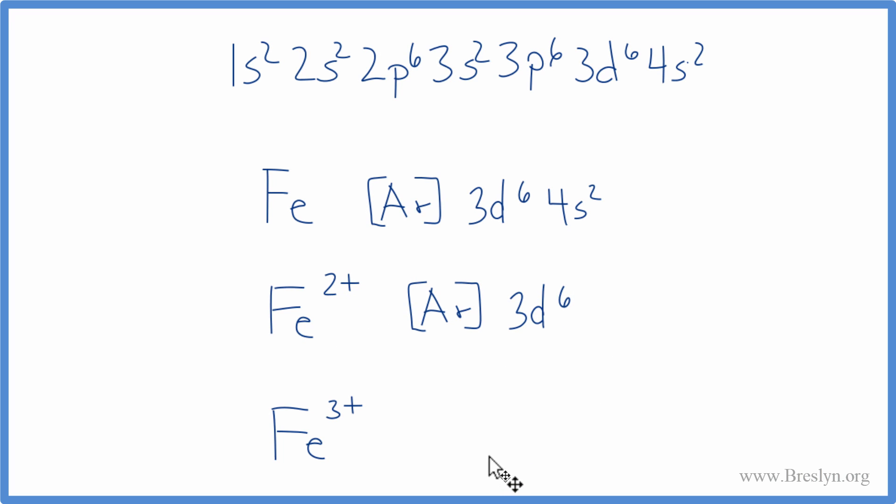For Fe³⁺, we need to get rid of three electrons. So we'll get rid of these two right here, and we'll change the 6 to a 5. And this is the electron configuration for Fe³⁺.